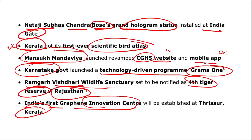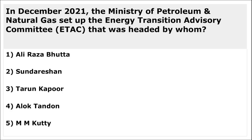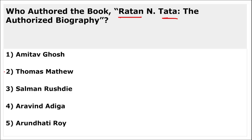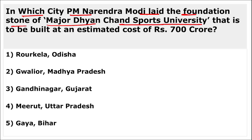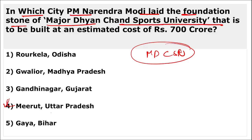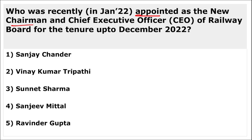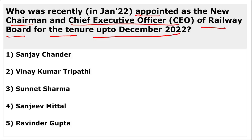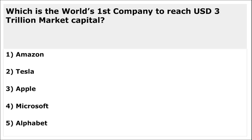Ranthambore Wildlife Sanctuary in Rajasthan was declared the fourth tiger reserve of Rajasthan. India's first graphene innovation centre is situated in Thrissur, Kerala. The Ministry of Petroleum and Natural Gas set up the Energy Transition Advisory Committee headed by Tarun Kapoor. Major Dhyan Chand Sports University was laid at Meerut, UP, at an estimated cost of 700 crore rupees. Vinay Kumar Tripathi was appointed as the new Chairman and CEO of the Railway Board up to December 2022.